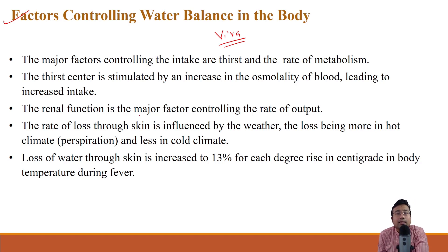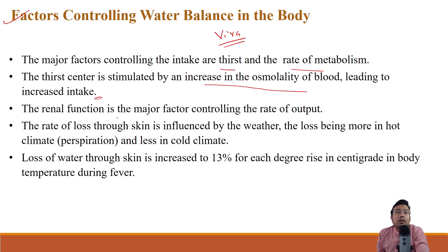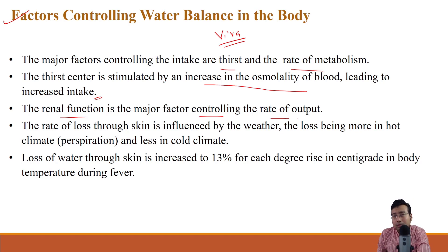Major factors controlling fluid intake are thirst and rate of metabolism. More thirst means more water intake; more metabolism means more water needed. Thirst is stimulated by increasing osmolality of blood, leading to increased intake. Glomerular filtration rate, or renal function, is a major controlling factor for rate of output. Insensible perspiration — sweating or imperceptible water loss through skin — varies with climate: very high in tropical humid climates and very low in cold climates.